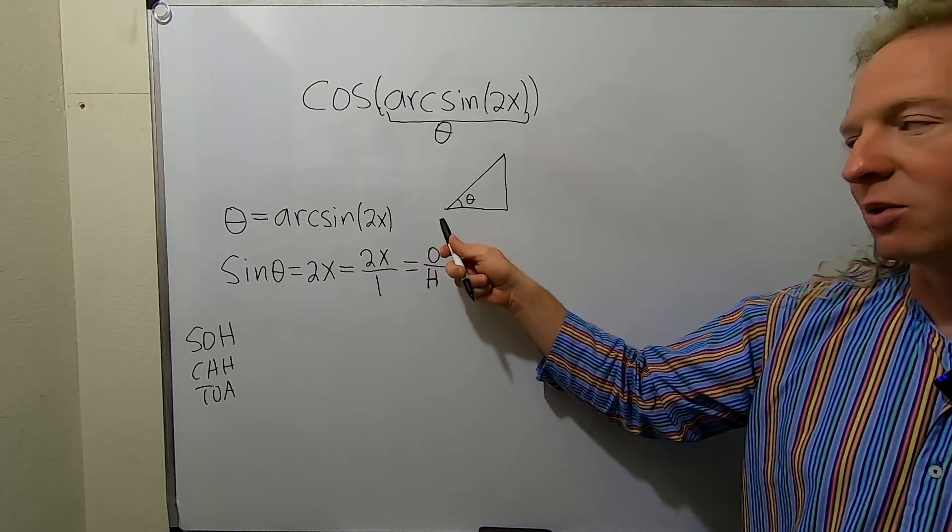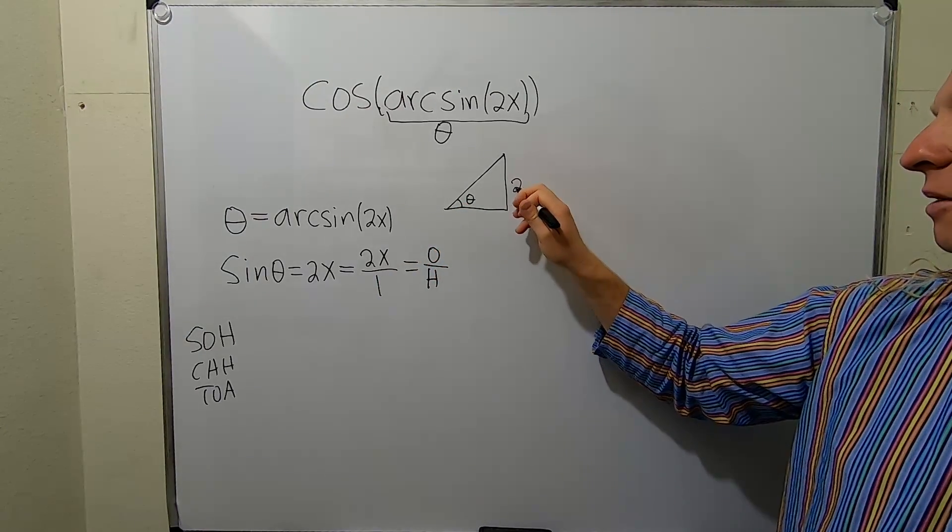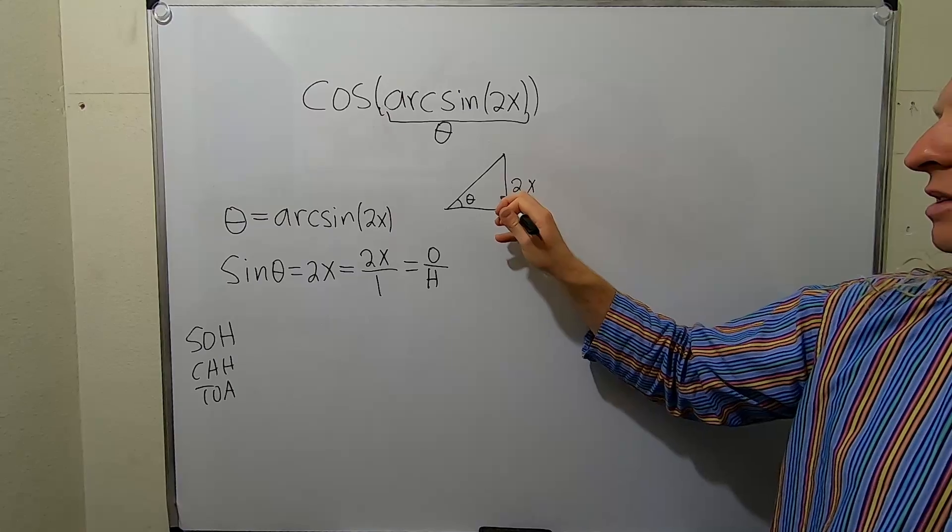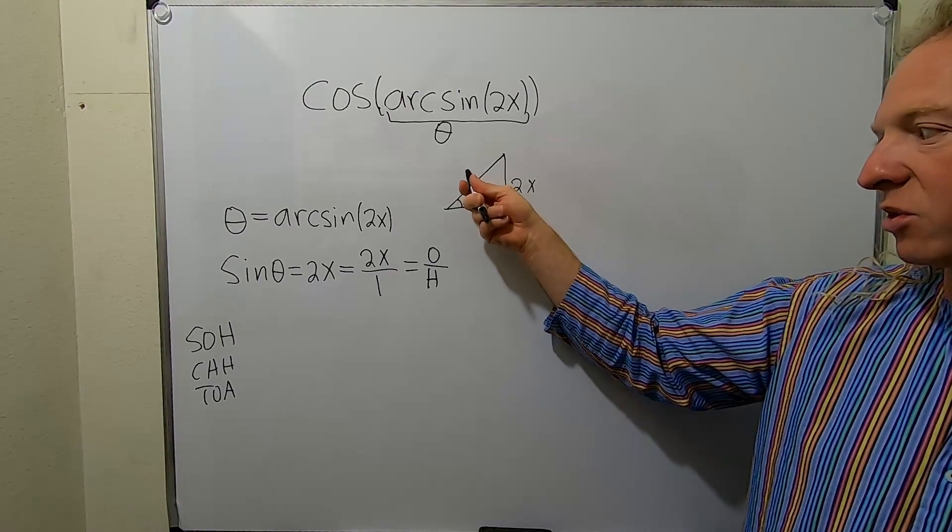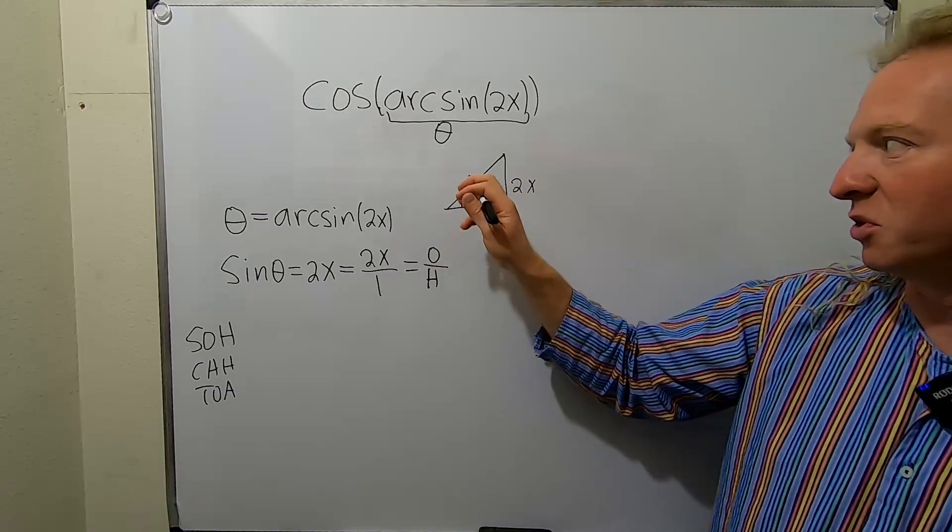So opposite is 2x. So opposite the angle would be here. This here is our 90 degree angle. So this is called the hypotenuse. So the hypotenuse is 1.